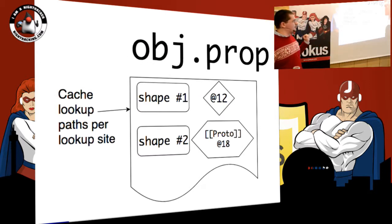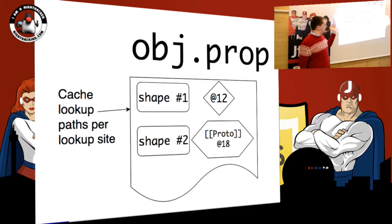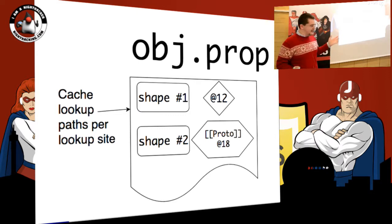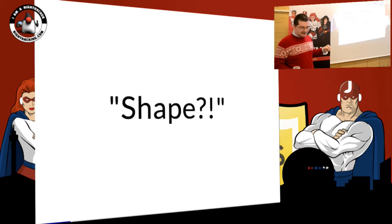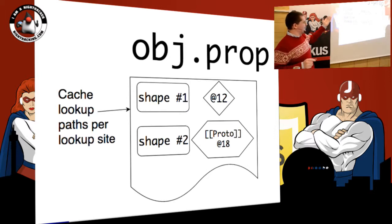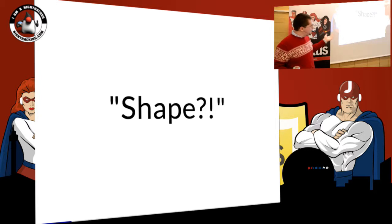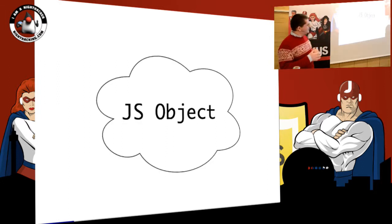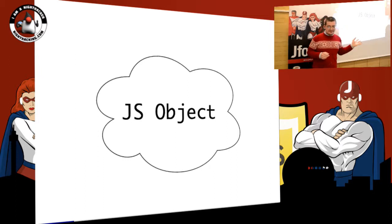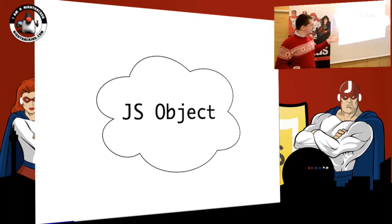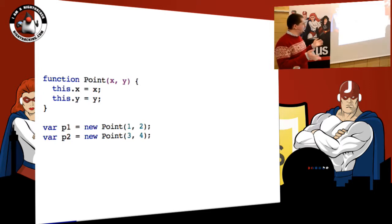Inline caching already allowed a JavaScript VM to run much faster than simple interpreters that constantly perform lookups. On the high level, inline caching looks like this: you have a property access site and then you have a cache which maps shapes to the places where the properties are. People who are paying attention may say: wait, you just told us that JavaScript has no shapes in objects whatsoever — and your slide here suddenly talks about shapes. How does it work?